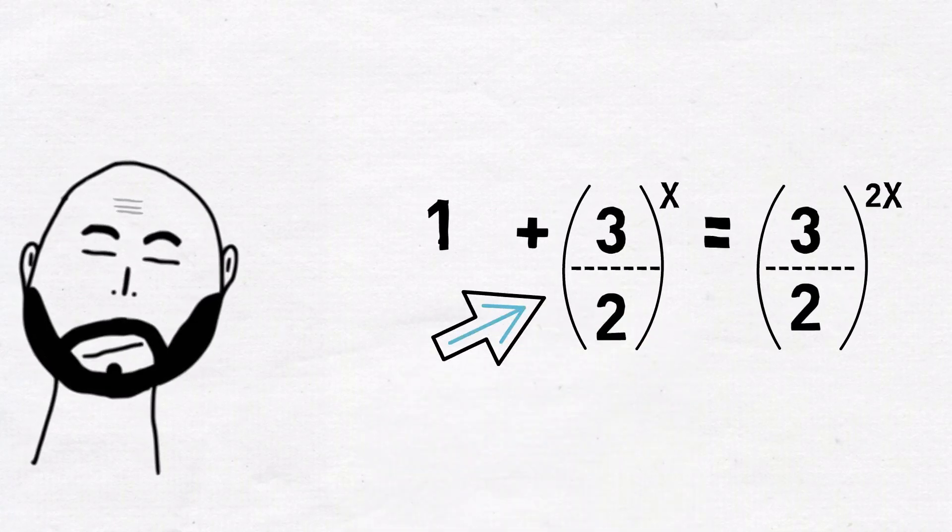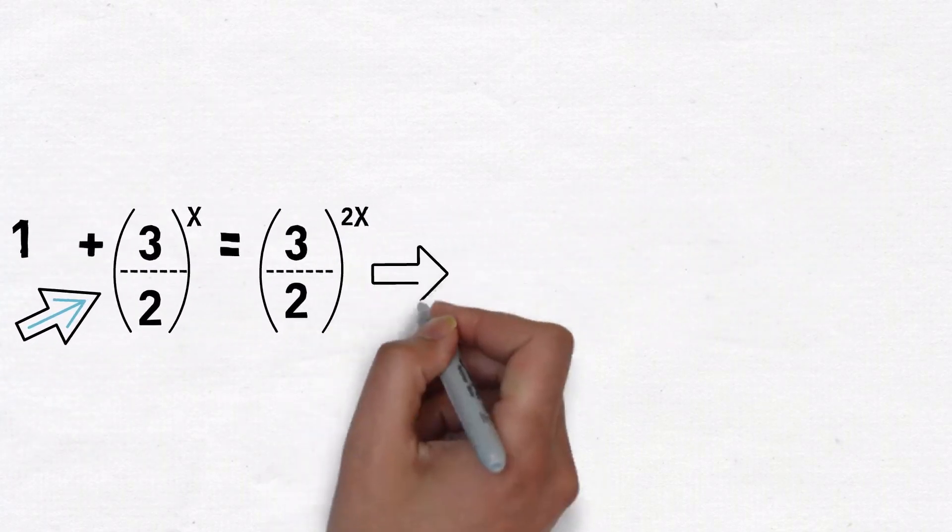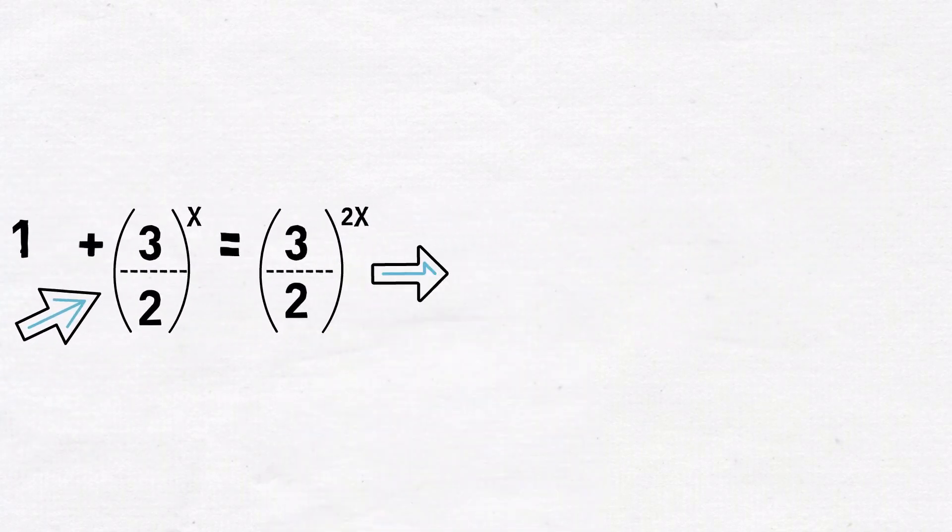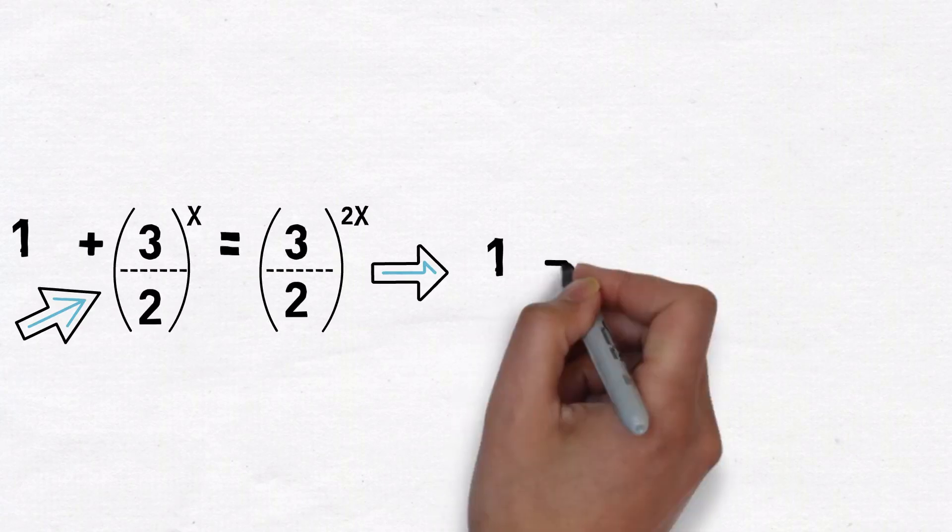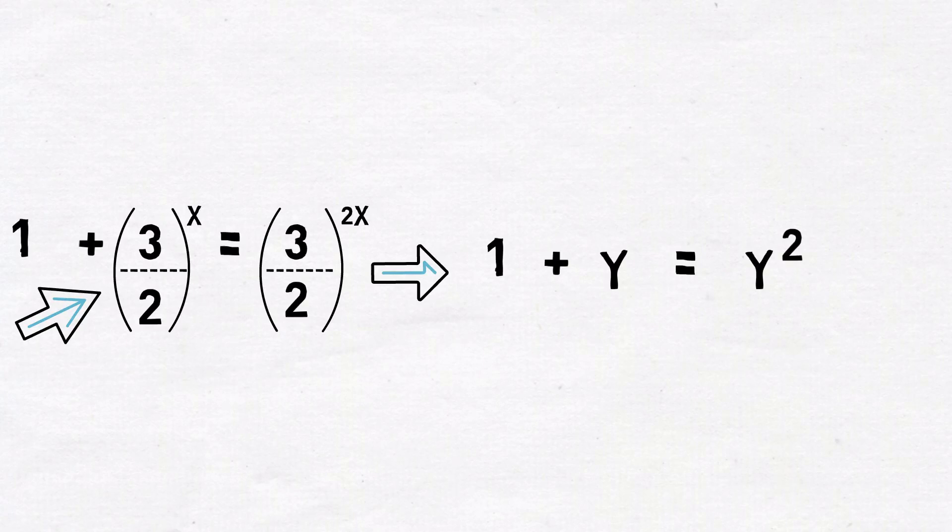Ok, now let's focus on this term here. 3 by 2 to the power x. Let's make it disappear for the moment. And we do so by introducing a new variable, say y. And let y equal to 3 by 2 to the power x. Now using y in the above equation, this is what we get.